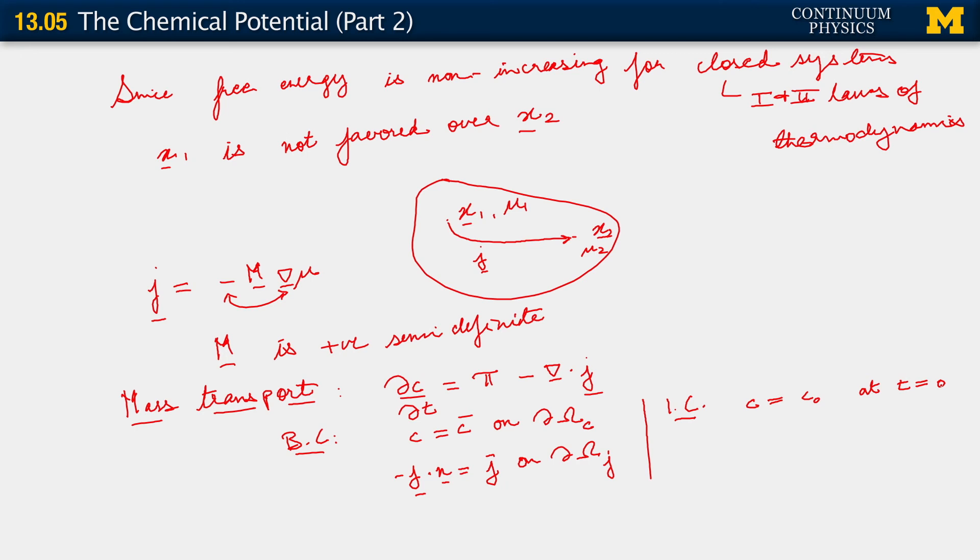And then, what is j? Well, we've just identified j to be minus M, the mobility tensor, grad mu. Where mu is the derivative of the free energy density function with respect to concentration. That completes our basic picture for mass transport in the continuum setting.